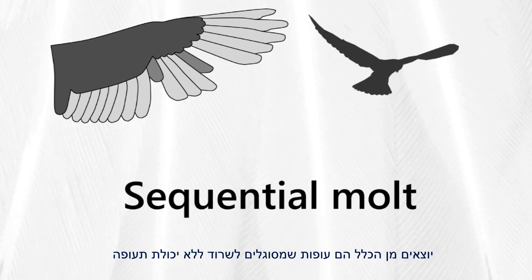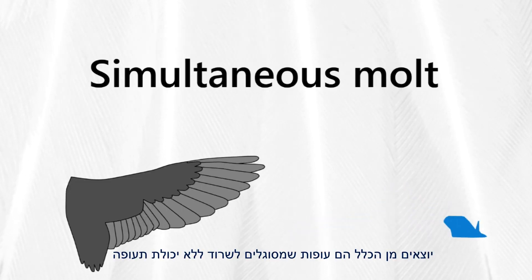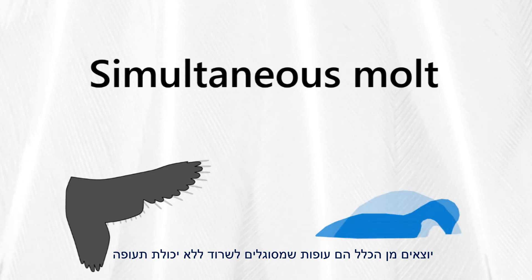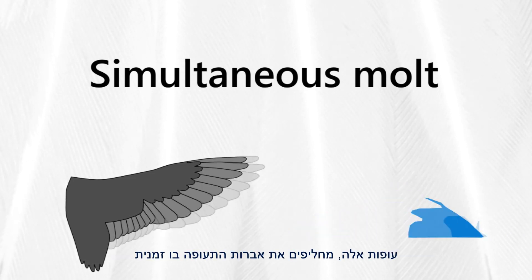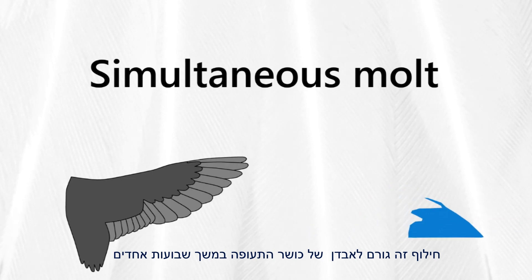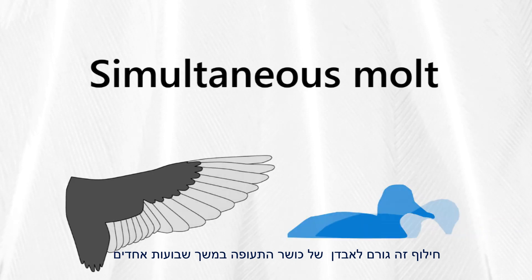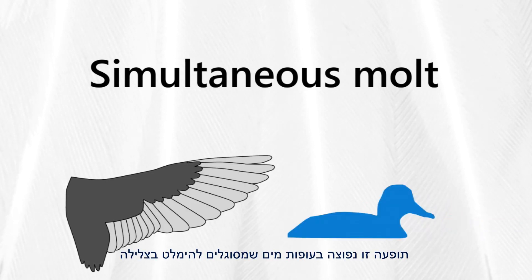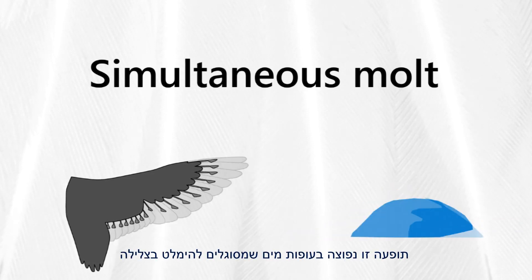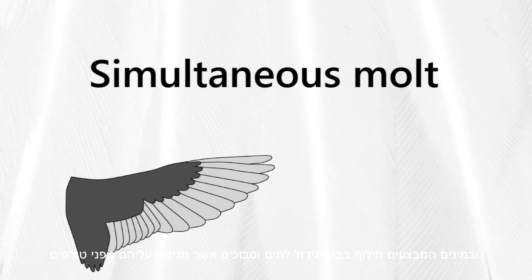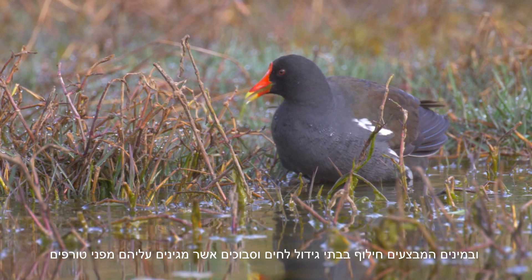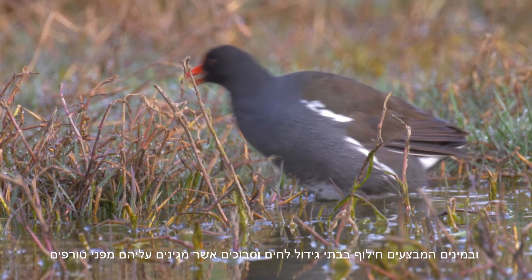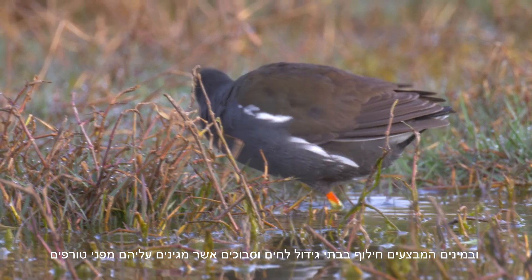However, birds that are able to survive without maintaining their flight ability replace their flight feathers simultaneously, so that they are unable to fly for a short period of a few weeks. This strategy occurs in many aquatic birds which can avoid predation by diving, and in species that spend their molting period within a very densely vegetated habitat that protects them from predators.